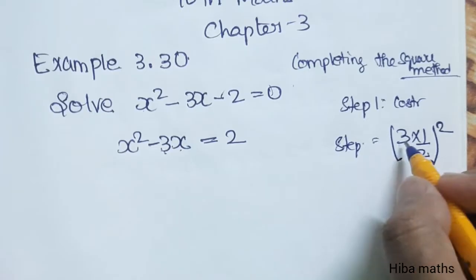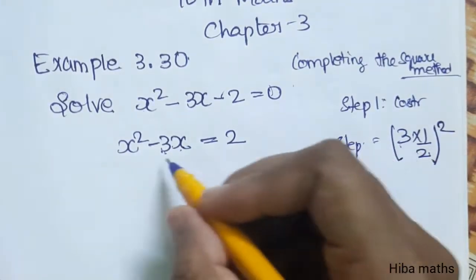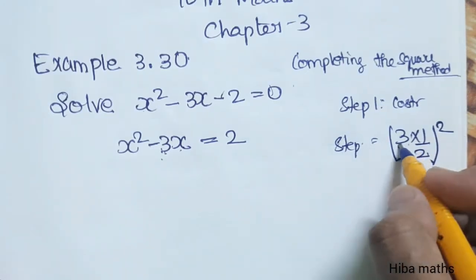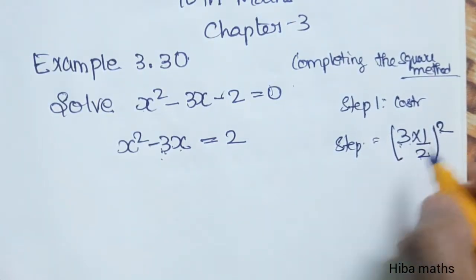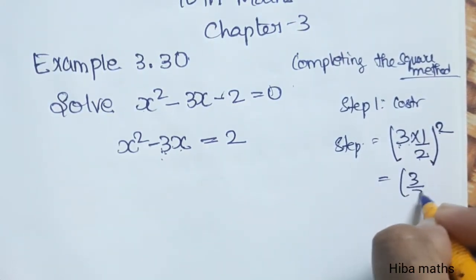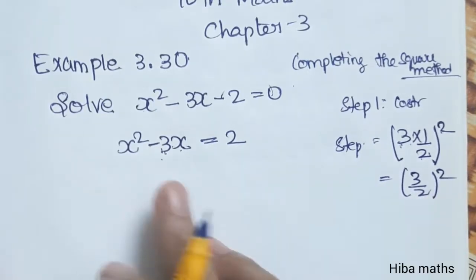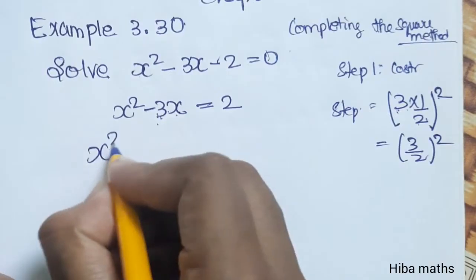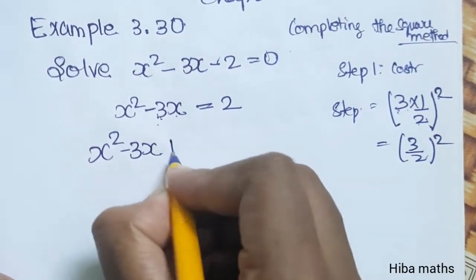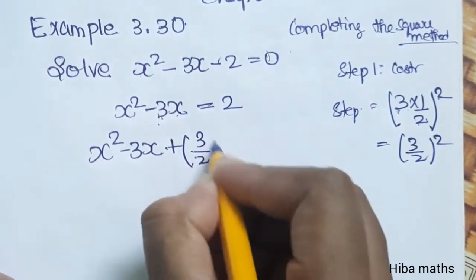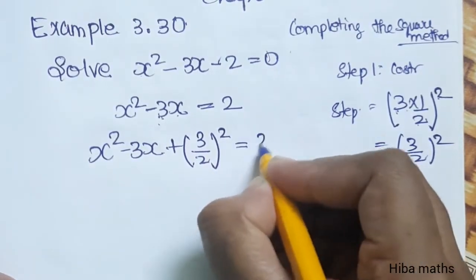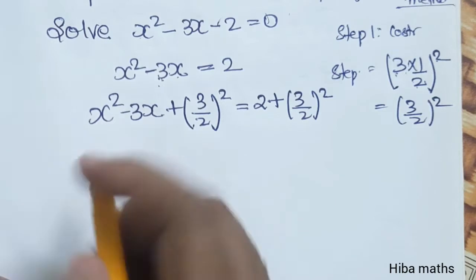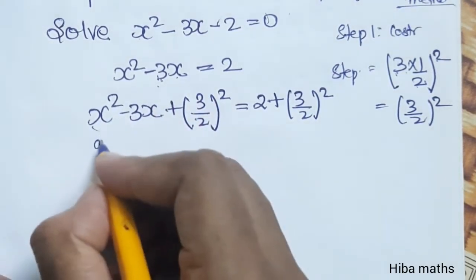Let's check it out. Now the coefficient of x is 3. This term is a².